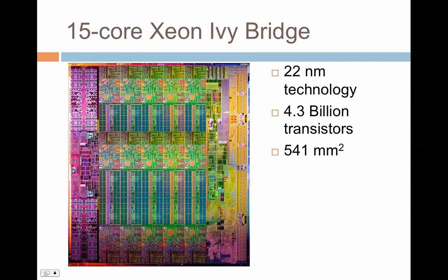The 15-core Xeon Ivy Bridge from Intel, built in 22 nanometers, integrates 4.3 billion transistors with a die size of around 541 mm². The trend is clear: technology scaling allows us to integrate more transistors, and die size is also growing. However, with 4.3 billion transistors it may not be possible to activate all of them simultaneously, because there is a power density constraint that changes the whole picture.